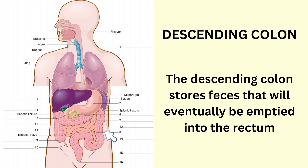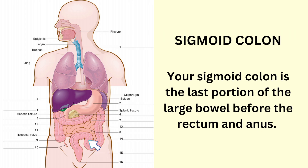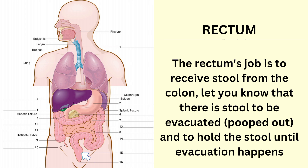Descending colon. The descending colon stores feces that will eventually be emptied into the rectum. Sigmoid colon. Your sigmoid colon is the last portion of the large bowel before the rectum and anus. Rectum. The rectum's job is to receive stool from the colon, let you know that there is stool to be evacuated, and to hold the stool until evacuation happens.